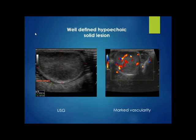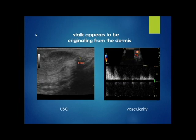Here are the key images of the case. On gross examination, the lesion is visible as a pedunculated mass on the back region. On ultrasound, we can see a well-defined solid hypoechoic lesion which shows marked vascularity. The stalk of the lesion appears to be originating from the dermis layer.